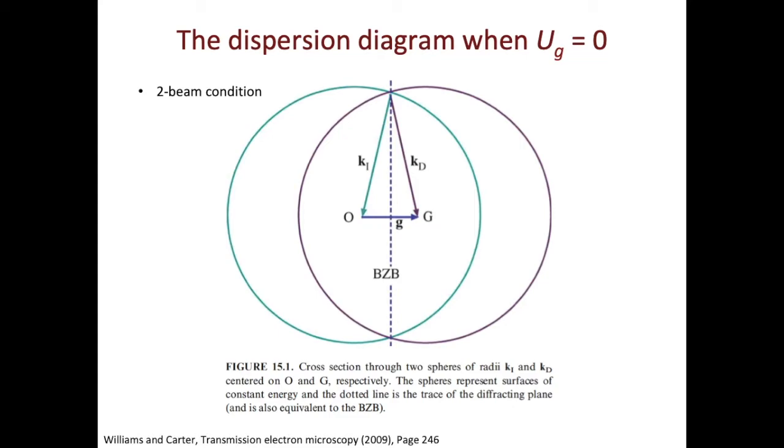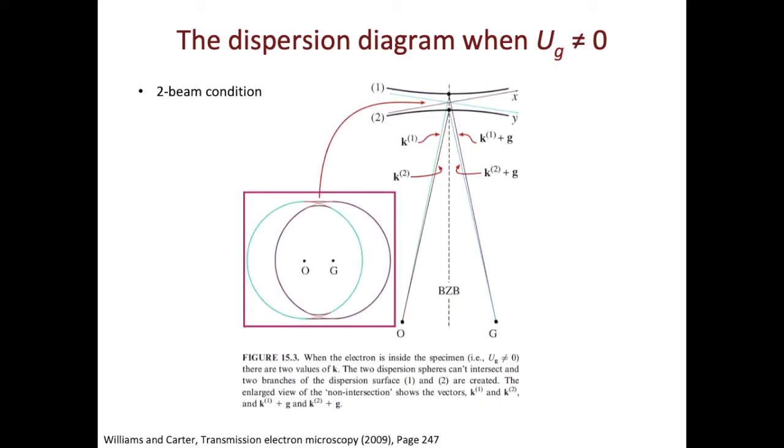So what if Ug is not equal to zero? When Ug is not equal to zero, these two spheres will not intersect. You will have a gap and these two branches. The gap you see here is analogous to the direct band gap you study in semiconductor physics. For the electron waves, you have the k1 and k2. You also have the k1 plus g and k2 plus g. These are the four block waves.